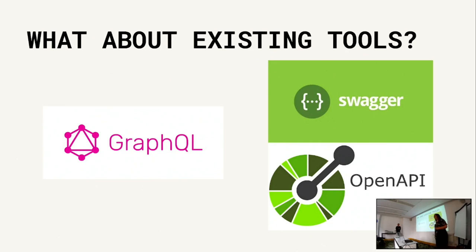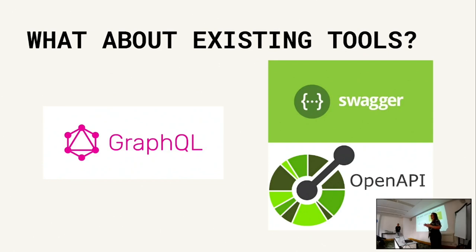Audience comment: So the code generation part essentially replaces what you normally do in business applications - creating DTOs, the data transfer objects that you always need to duplicate in the backend, and making sure they match. The code generation part eliminates that. Exactly - you're writing the same thing in different places and you eliminate it just by having one DSL that code generates for the different places.